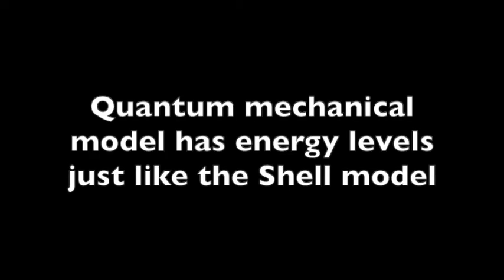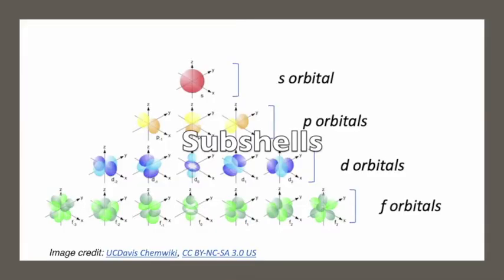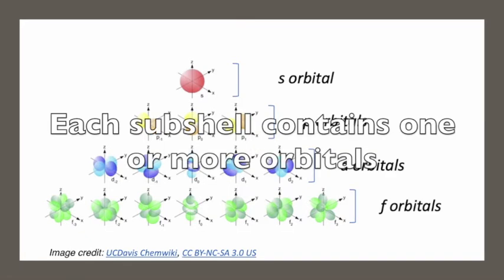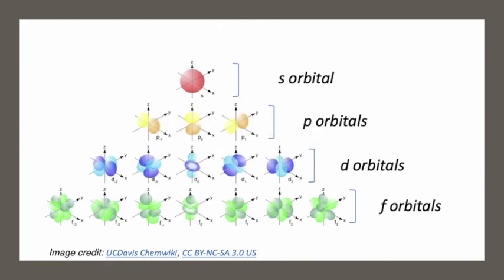The quantum mechanical model has energy levels just like the shells in the Shell model. It also has sub-shells named S, P, D, and F. Each of these contains one or more strangely shaped orbitals. These strangely shaped orbitals are the probability densities where an electron with a particular energy level could be. This picture depicts some of the strange shapes of these orbitals.